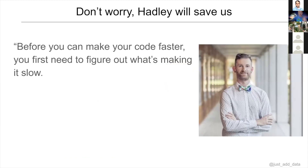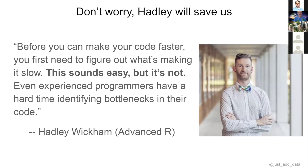It's safe to assume that when we're talking about code being slow, Hadley can save us. He wrote the book Advanced R, and he says: before you can make your code faster, you need to figure out what's making it slow. This sounds easy, but it's not.